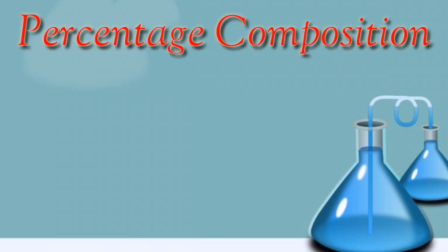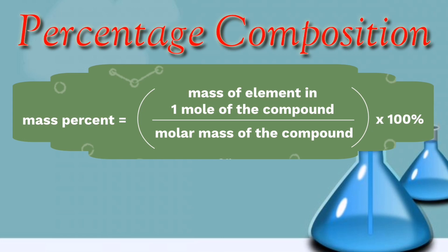In this video, we're going to talk about the percentage composition of each element in a compound by following this formula. Mass percent equals the mass of each element in one mole of the compound over the molar mass of the whole compound, times 100 to get the percentage.